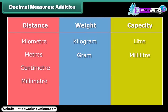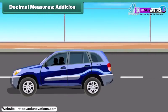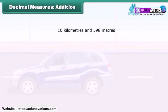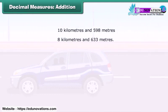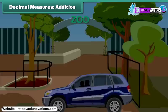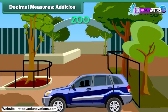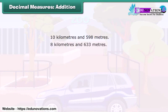We have learned the different units used for measuring distance, mass, and capacity. Let us now learn how to add, subtract, and multiply the quantities in different units. One day Ryan went to the zoo with his uncle. They covered first 10 kilometers and 598 meters very fast. But they took much time in covering the next 8 kilometers and 633 meters. How much distance did they travel in total?